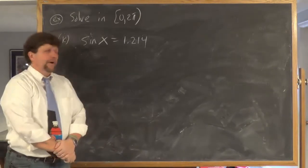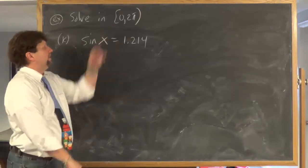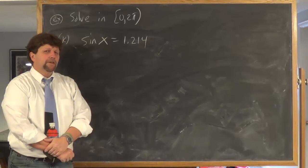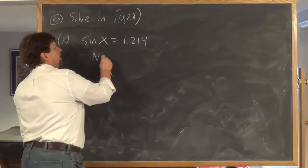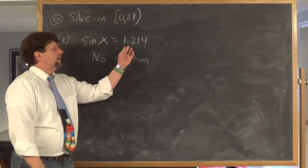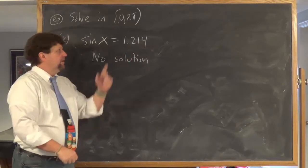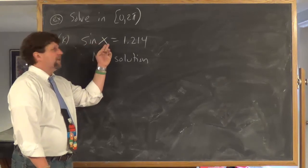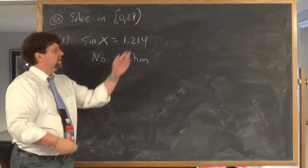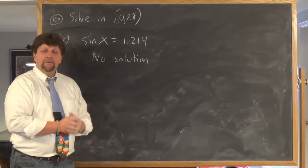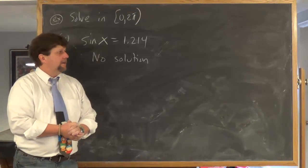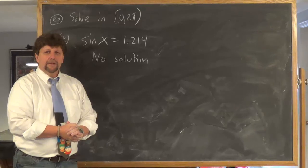The last example: solve sinx = 1.214 on the interval 0 to 2π. Looking at this equation, I can immediately say it has no solution. Why? Because 1.214 is larger than 1. The sine function always outputs values between -1 and 1 — you can't take the sine of any angle and get a result larger than 1. So this equation has no solution. Thanks for watching.